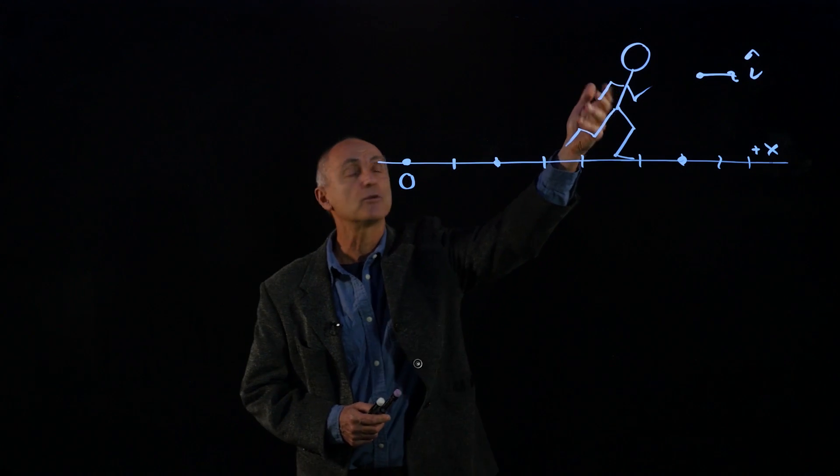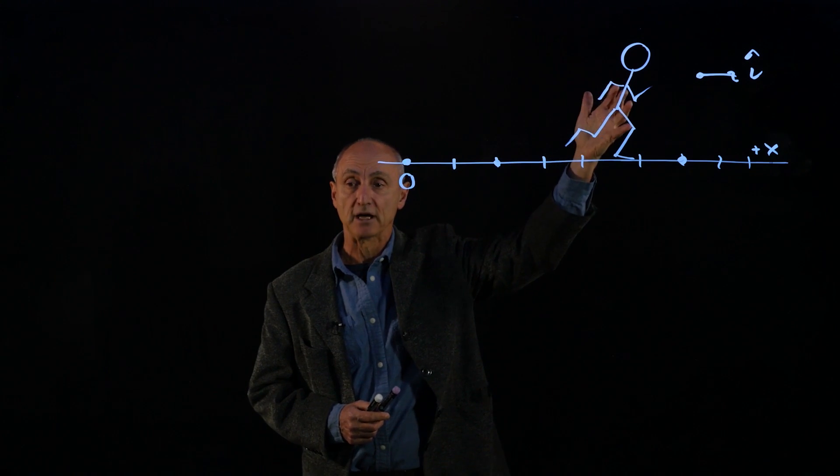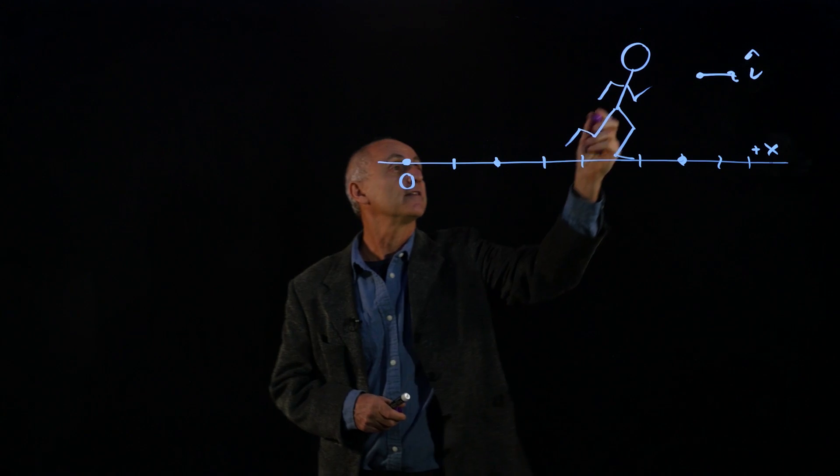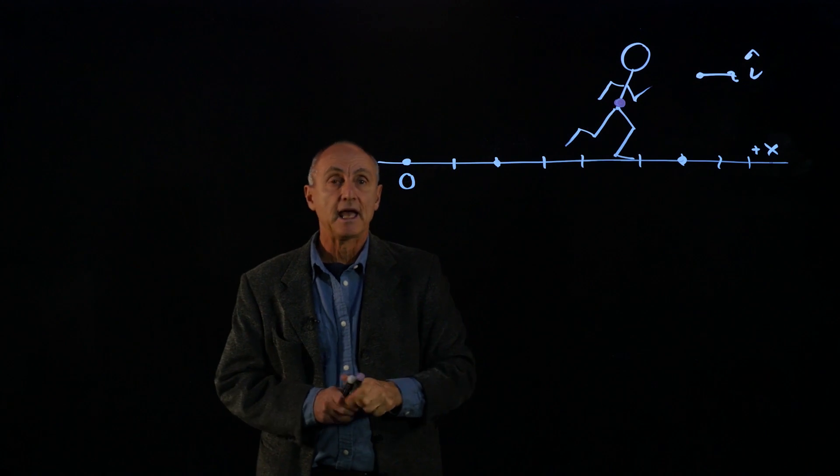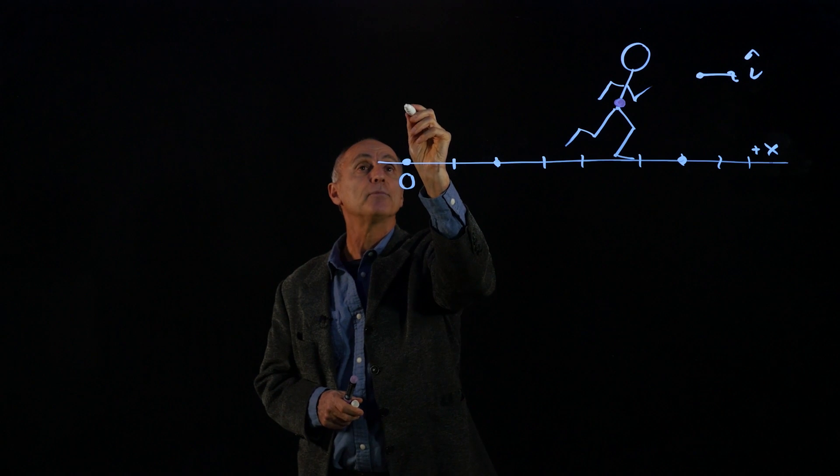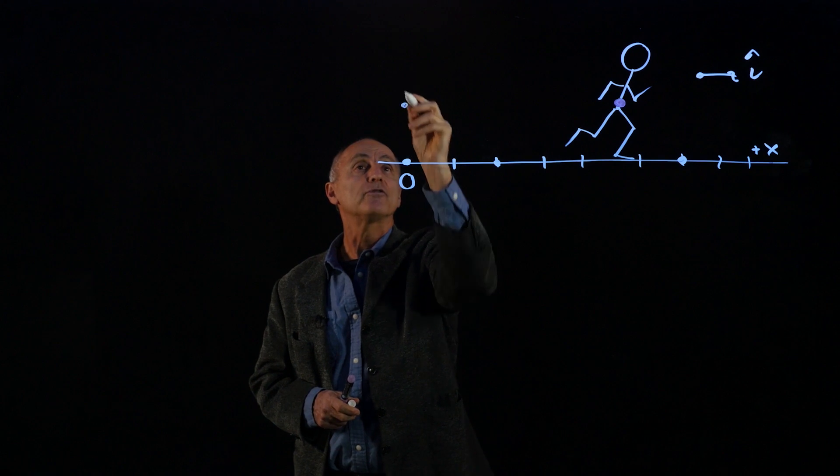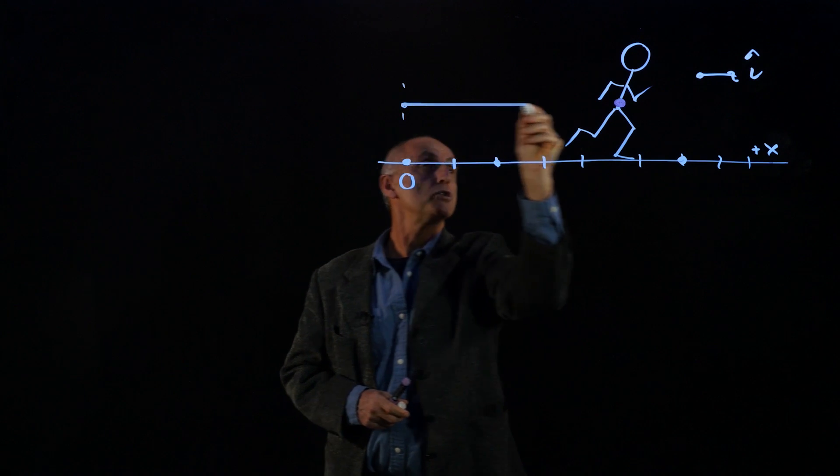Now, the runner is a non-rigid object. Legs and arms are moving back and forth. So let's just imagine that there's some fixed point in the runner at the center. And let's give a vector. So we're going to draw a vector from our origin to that point.